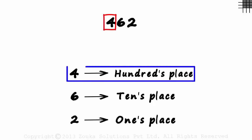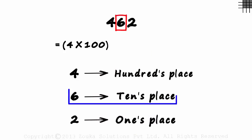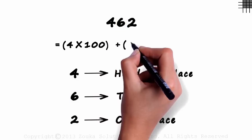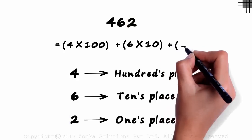As 4 lies in the hundreds place, we can write 4 times 100. As 6 is in the tens place, we add 6 times 10 to this. And as 2 is in the ones place, we add 2 times 1.